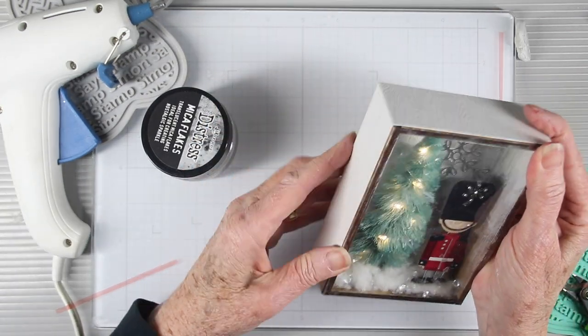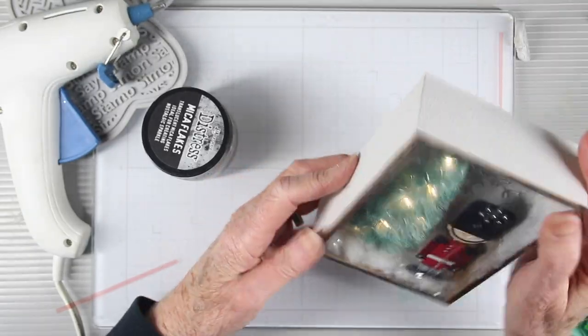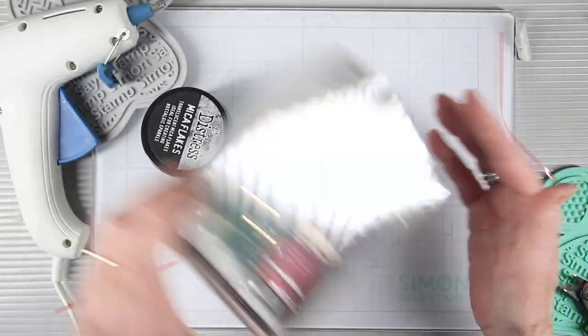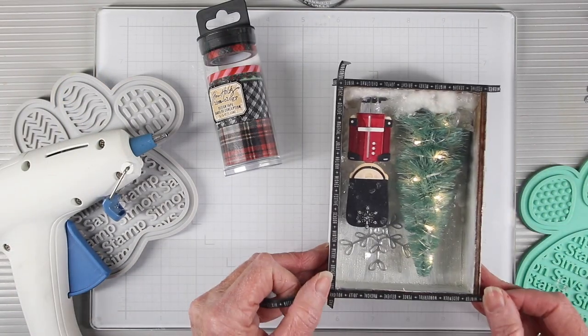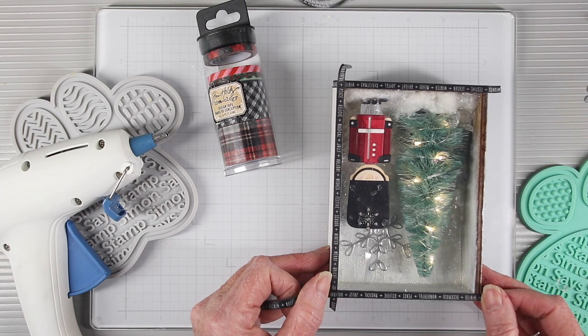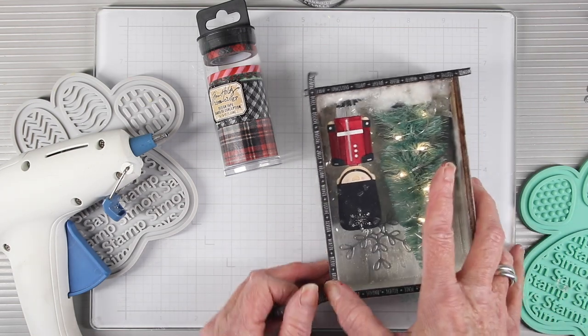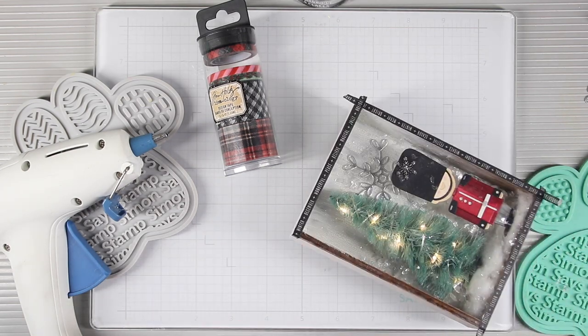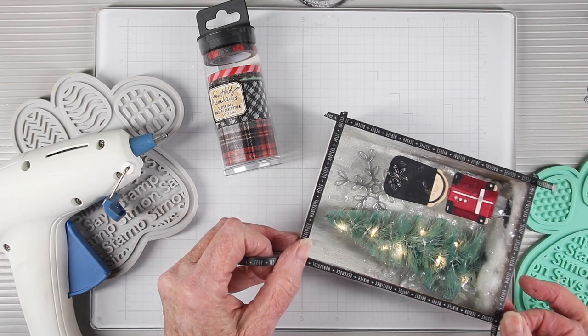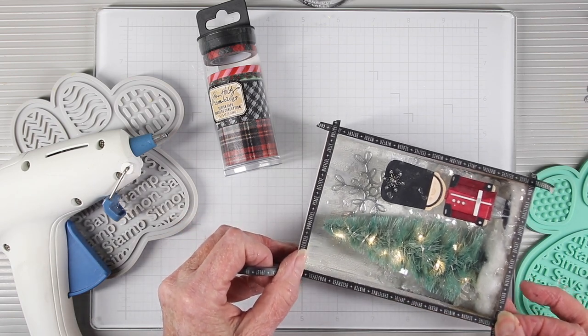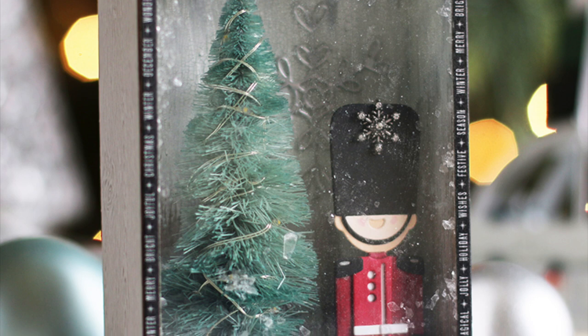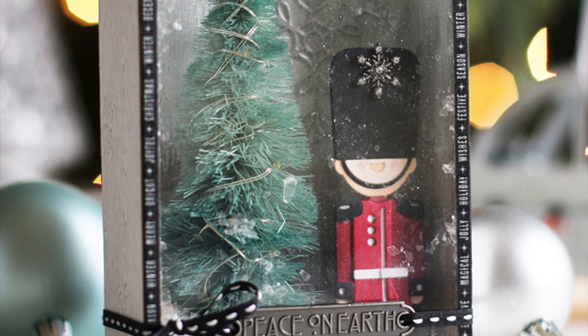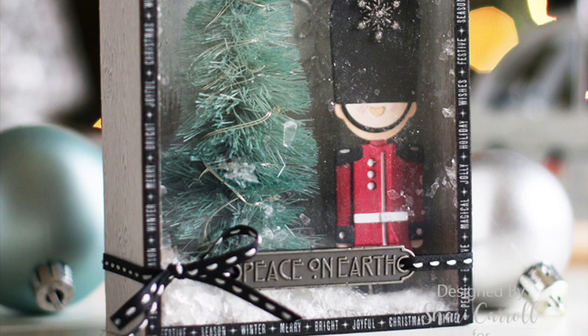To finish off the outside of the box I'm using the Tim Holtz ideology design tape and I'm just running a strip around each of the sides just covering up the adhesive underneath. When I'm done I'll snip off the ends and secure each of the corners with a little bit of glue. I've also added a ribbon tied in a bow with a word plate from Tim Holtz and I really love how this project turned out, especially once we turn the lights on and let it glow at night.